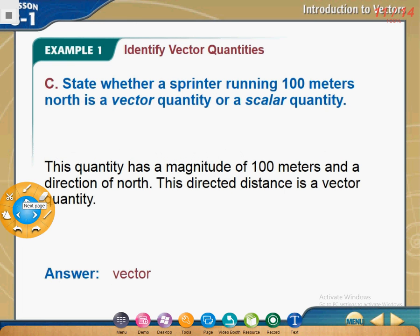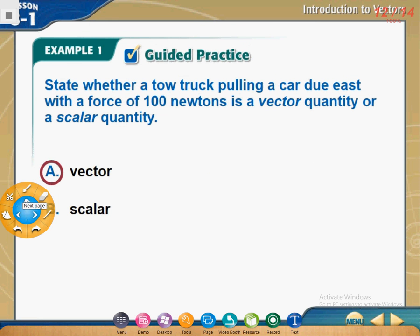Again here, the key words directly, we have 100 meters, and we have north. This is the word which will tell us that this is a vector. State whether a two-track pulling a car due east with a force of 100 newtons is a vector. What do you think? Why it's a vector? Yes, excellent. Because we have the word east.